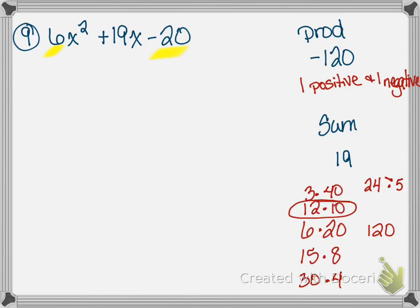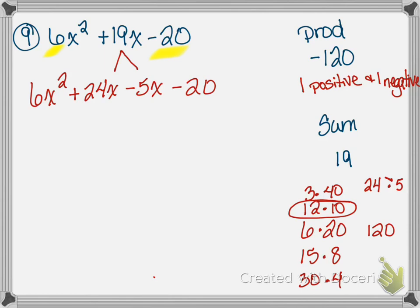Because our sum is positive 19, the 5 has to be the negative one. We split the middle term: 6x squared plus 24x minus 5x minus 20. Note that 24x minus 5x equals 19x — we're working backwards to our two binomials. We have not changed the value of the expression; we've just split the middle term.